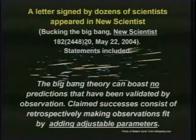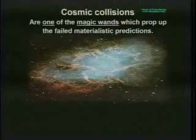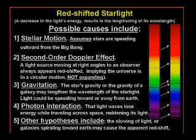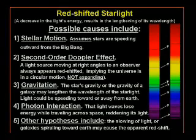Making observations fit by adding adjustable parameters. One of the proofs thrown out as proof of the Big Bang is red-shifted starlight. They say that stellar motion assumes that the stars are speeding away from the supposed Big Bang, which causes the red shift.